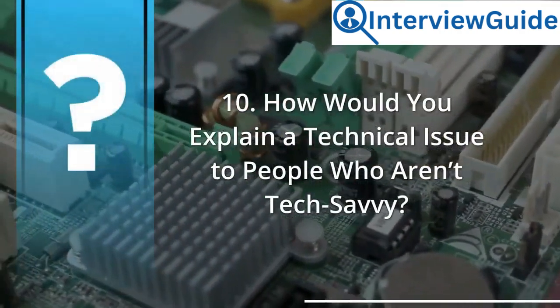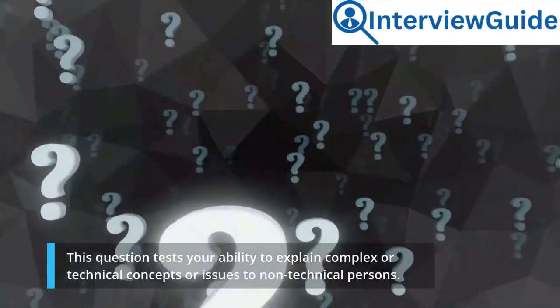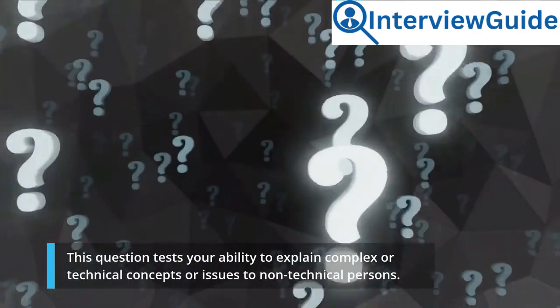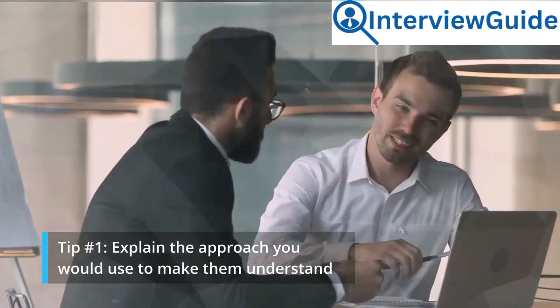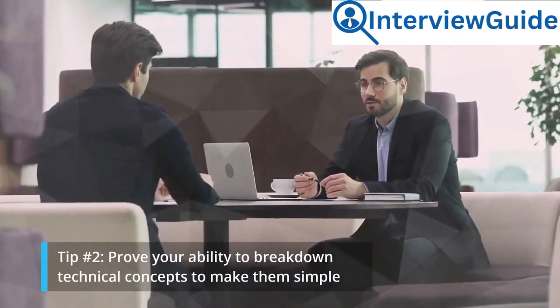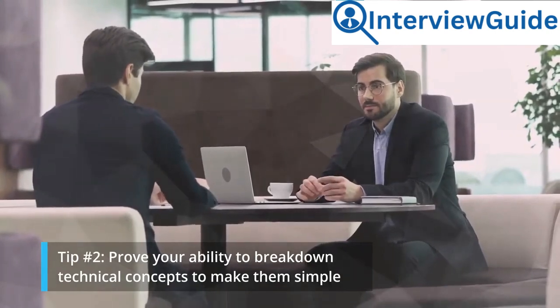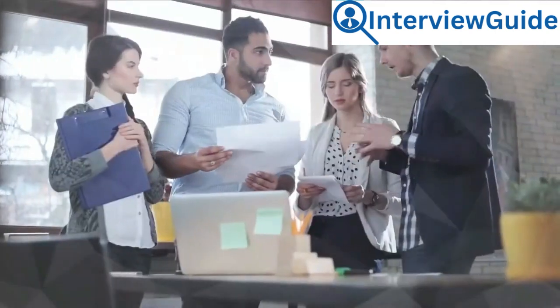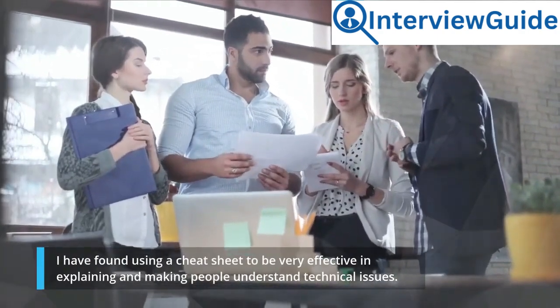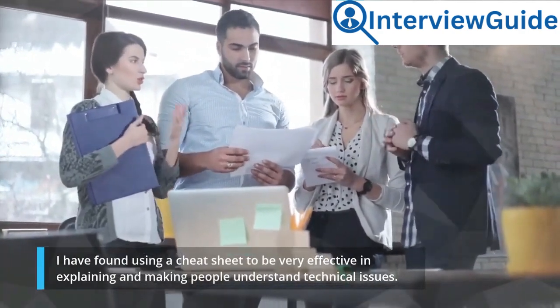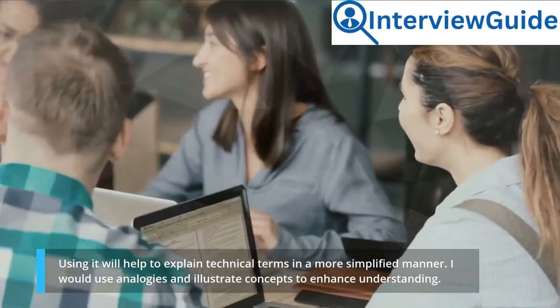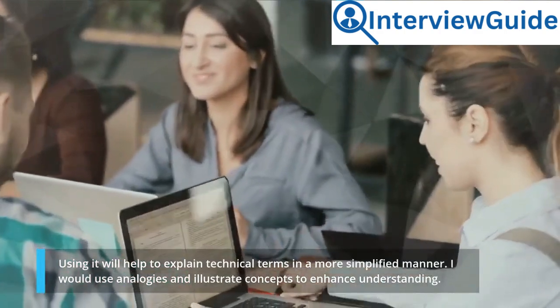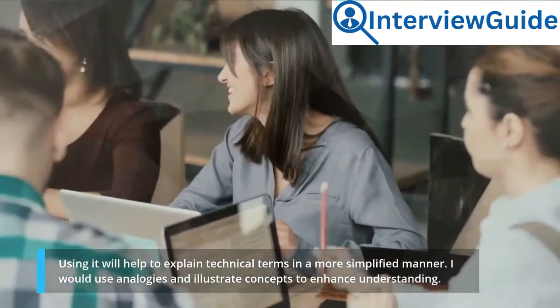Question 10: How would you explain a technical issue to people who aren't tech savvy? Tip number 1: explain the approach you would use to make them understand. Tip number 2: prove your ability to break down technical concepts to make them simple. Sample answer: I have found using a cheat sheet to be very effective in explaining and making people understand technical issues. Using it will help to explain technical terms in a more simplified manner. I would use analogies and illustrate concepts to enhance understanding.